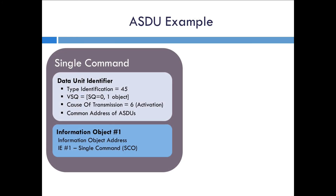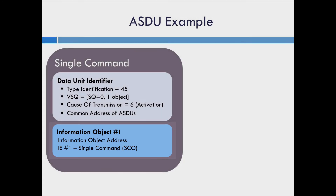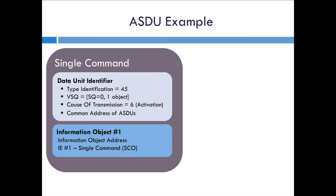When you put together the ASDU for a single command, the information object includes the address for the object being controlled and the SCO, or single command element. In the data unit identifier, the type ID is set to 45 — the number for a single command. The sequence bit is zero because it's not a sequence measurement, and it indicates there is only one object. When starting a command, the cause of transmission is activation, or 6. Then it has the common address for this set of ASDUs.